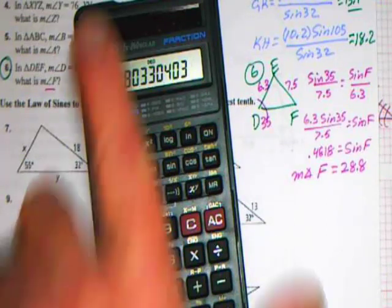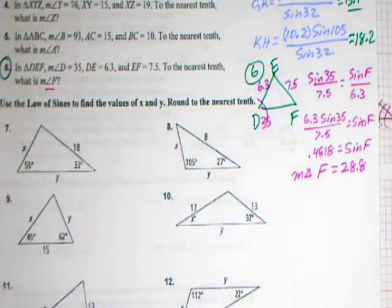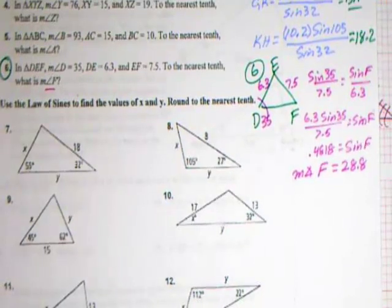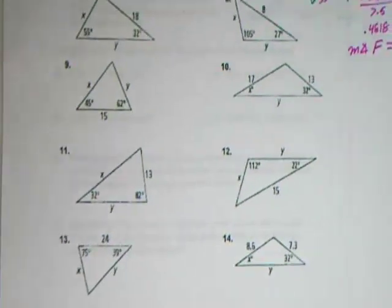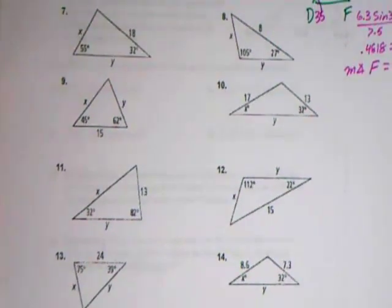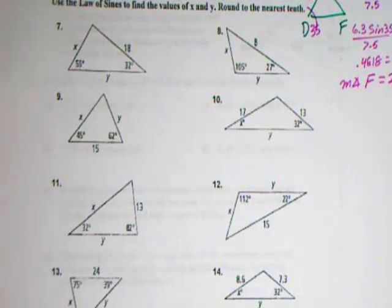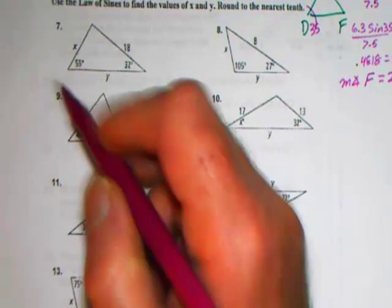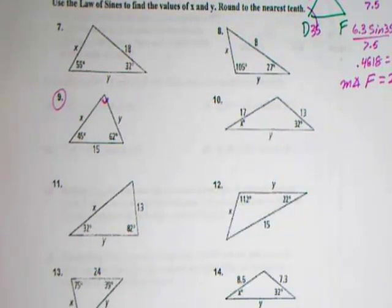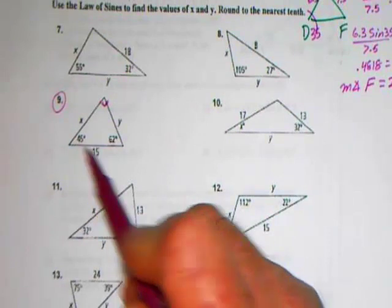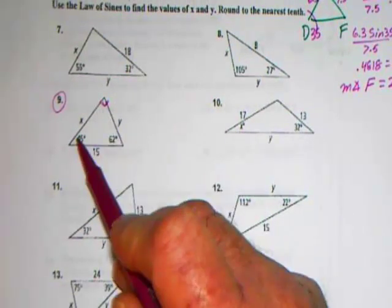So those two problems from the top section of the page use the law of sines. Here we have some triangles that are given to us rather than giving us the words, and they want us to use the law of sines to find x and y. So let's look at number 9. They're giving us a 15, but they're not giving us this opposite angle.